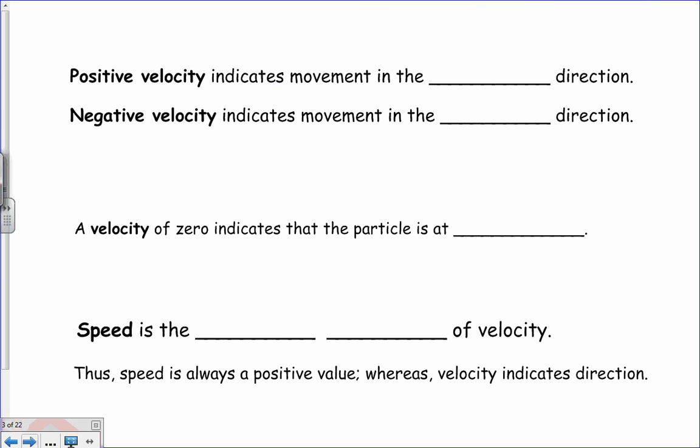Positive velocity indicates movement in the positive direction. Negative velocity indicates movement in the negative direction. Typically, in a problem, you'll be moving up or down. So up would be positive, down would be negative, or left and right. So right would be positive, left would be negative.